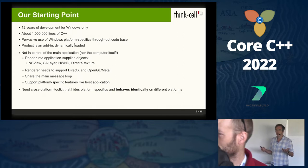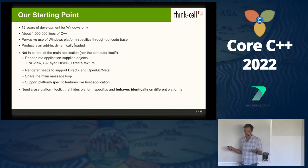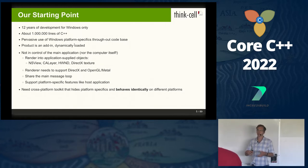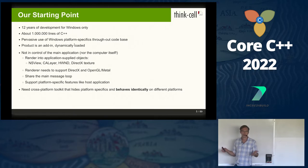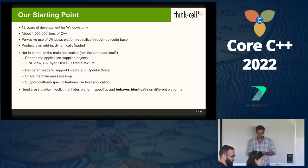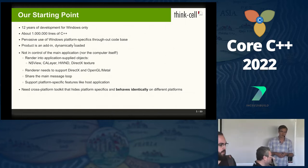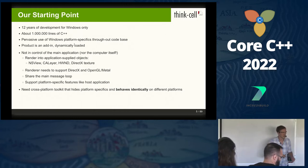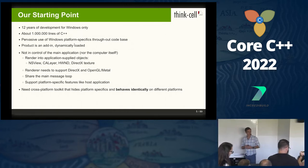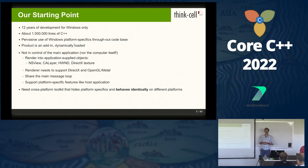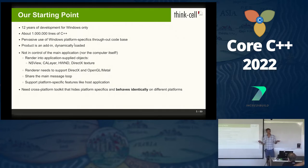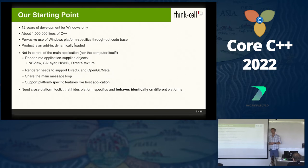Still, when we started porting our software to macOS, we would have liked to have some cross-platform toolkit that would just hide all the platform specifics from us, give us an identical C++ interface, and just do the same and the right thing on each operating system. My talk is largely about why this doesn't exist, and why this cannot exist in that general form.